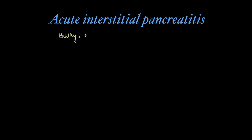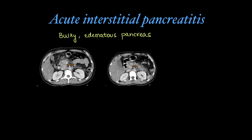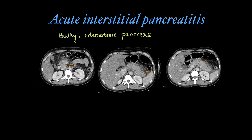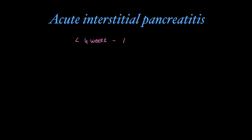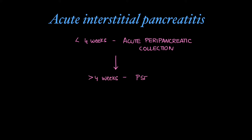Acute interstitial pancreatitis shows a bulky, edematous pancreas. In this case, the head, neck, body, and tail all show an increase in size. This condition has two subtypes based on duration: within four weeks it's called acute peripancreatic collection, and after four weeks, when wall formation occurs, it forms a pseudocyst.